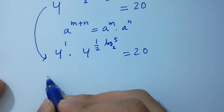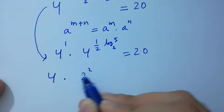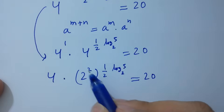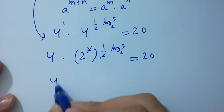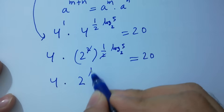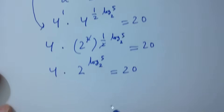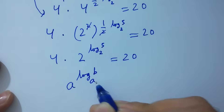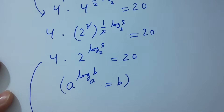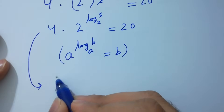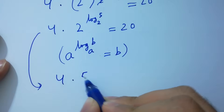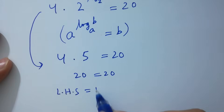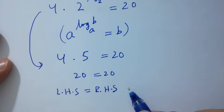4 to the power 1 is 4, times 2 squared to the power 1 over 2 log 5 to the base 2 equals 20. The 2 and 2 cancel, giving 4 times 2 to the power log 5 to the base 2 equals 20. Since a to the power log base a of b equals b, we get 4 times 5 equals 20, which is 20 equals 20. Left-hand side equals right-hand side, which shows that the value of a satisfies the equation.